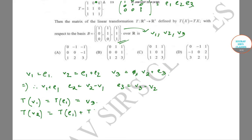T(v2) = T(e1) + T(e2). T(e1) is v3, and T(e2) corresponds to the second column, which is (0,1,1). We can write (0,1,1) = (1,1,1) − (1,0,0), so T(e2) = v3 − v1. Therefore T(v2) = v3 + (v3 − v1) = 2v3 − v1.